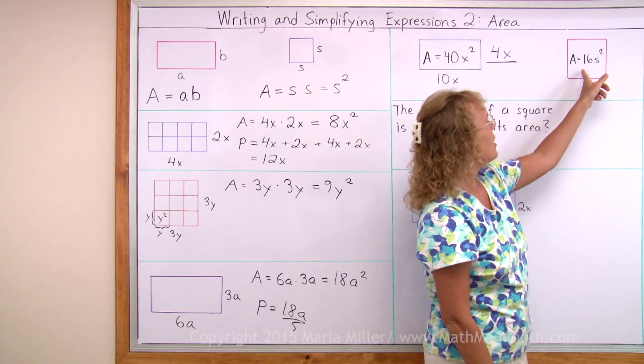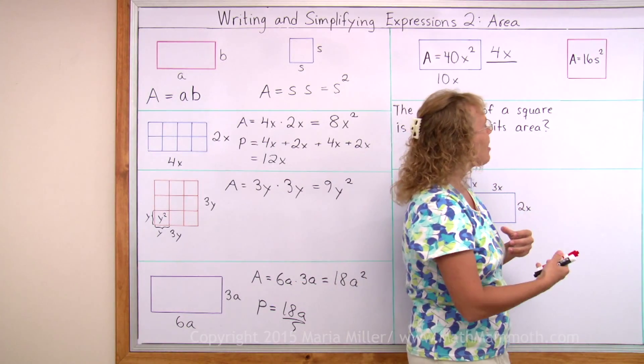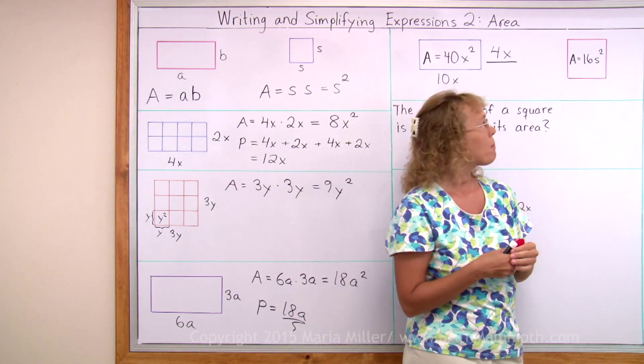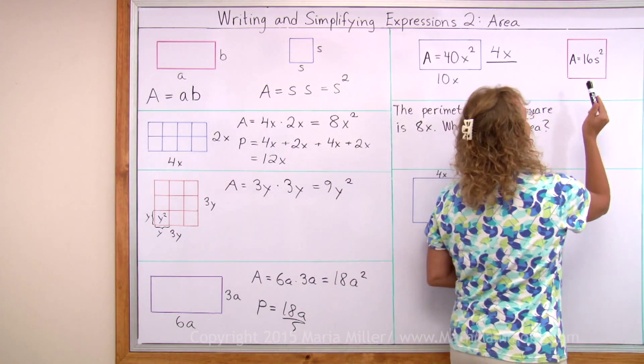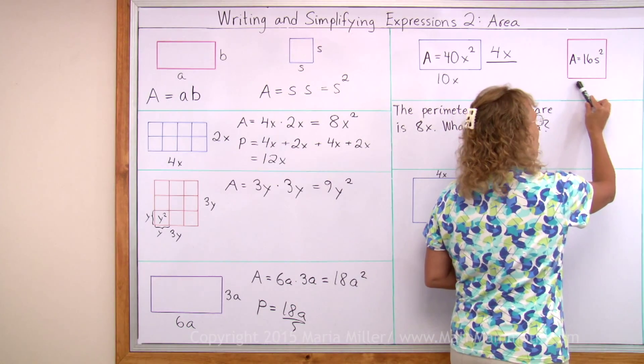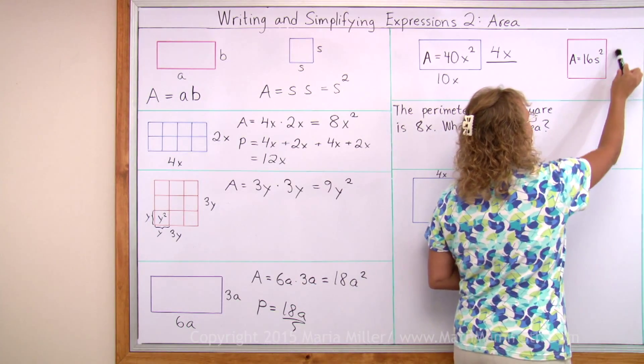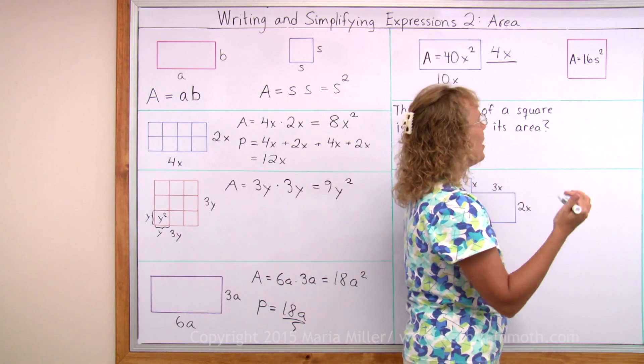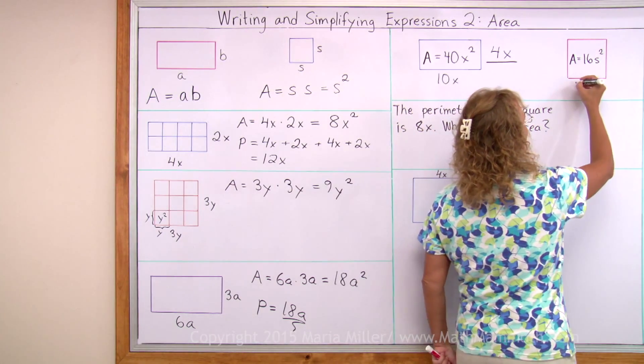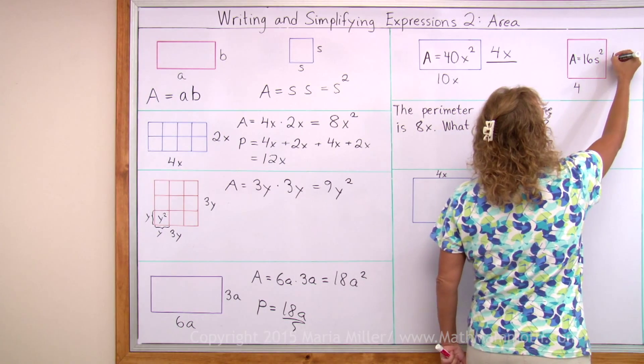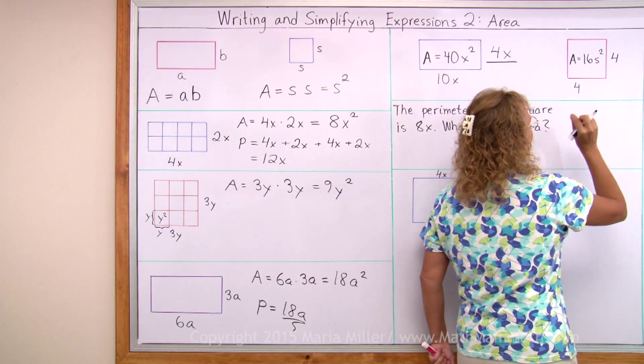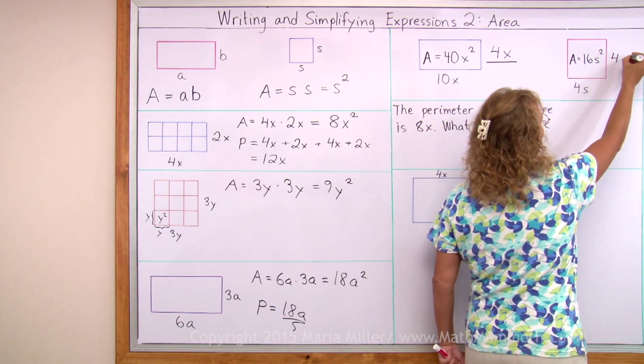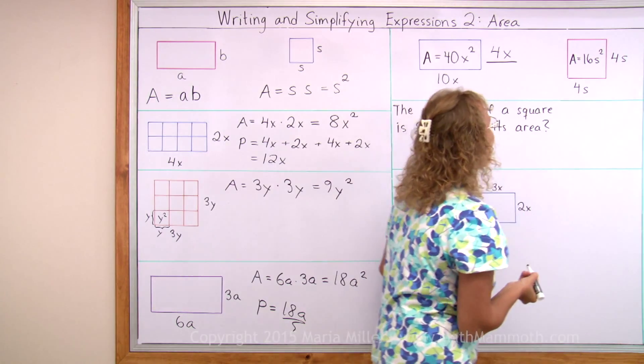How about here? This is a square. Its area is 16s squared. What is the side length? It is some number or some expression here times itself gives you 16s squared. Now the 16 makes you think of 4, because 4 times 4 equals 16. And then what times what equals s squared? Well, s of course. So we get 4s as the side length.